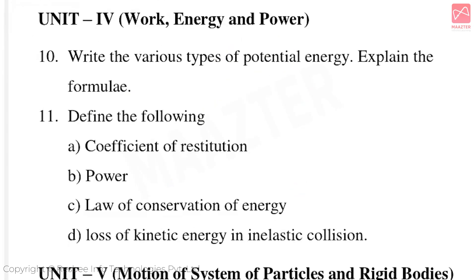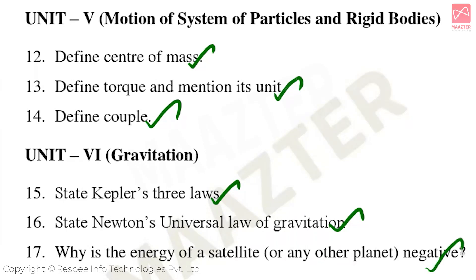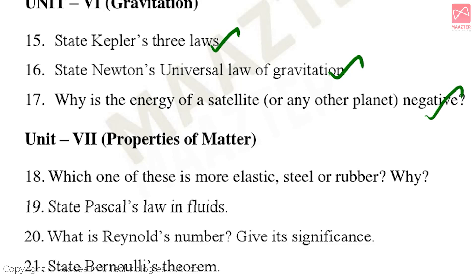Unit 4 Work Energy and Power — important two-mark questions: Write the various types of potential energy, explain the formula. Define the following: Coefficient of Restitution, Power, Law of Conservation of Energy, Laws of Kinetic Energy in Inelastic Collision. Unit 5 Motion of System of Particles and Rigid Bodies: Define Center of Mass, Define torque and mention its unit, Define Couple. Unit 6: State Kepler's 3 Laws, State Newton's Universal Law of Gravitation. Unit 7 Properties of Matter: Which one is more elastic — steel or rubber, and why? State Pascal's Law in fluids, What is Reynolds number? Give its significance, State Bernoulli's Theorem.